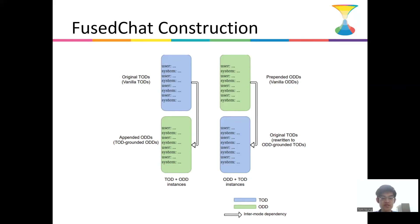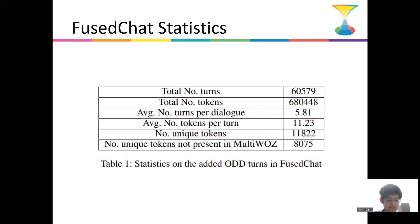After all the manipulations, our dataset now contains two types of dialogues. When we appended ODDs, we created TOD-plus-ODD instances. When we prepended ODDs, we created ODD-plus-TOD instances. Together, we have modified all 10,000 dialogues present in MultiWOZ. Here are the statistics of the added ODD turns.